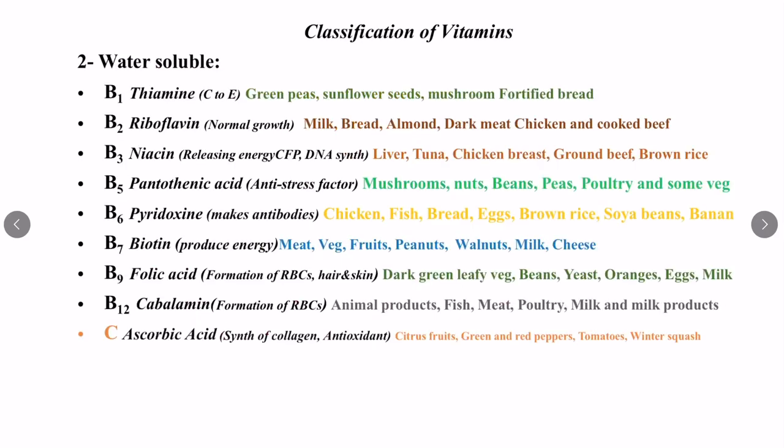The next one is water-soluble vitamins. Water-soluble vitamins are those that can dissolve in water. Because our body is a watery environment, these vitamins can move through our body pretty easily and can also be flushed out by our kidneys. Water-soluble vitamins include vitamin B complex and vitamin C. Vitamin B has eight vitamins: B1, B2, B3, B5, B6, B7, B9, and B12.